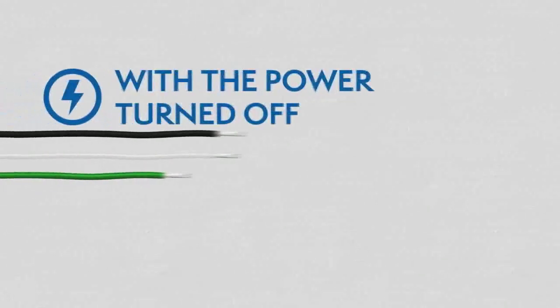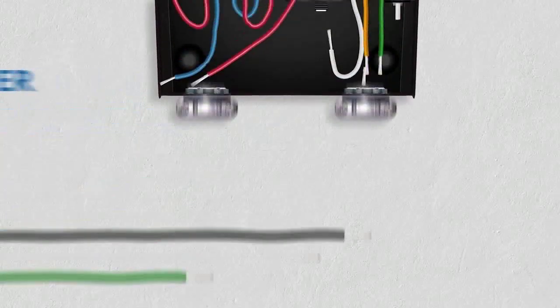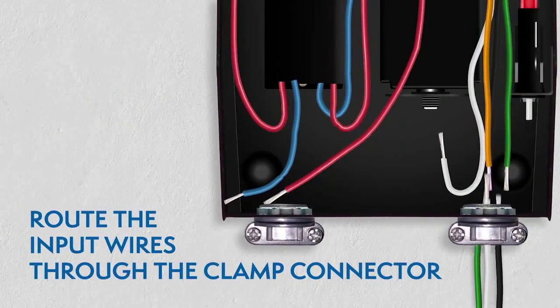While the power is still off, route the input wires through the clamp connector and connect the wires using the UL listed wire nuts.